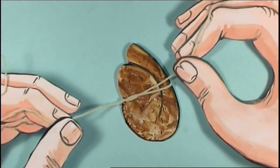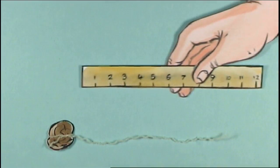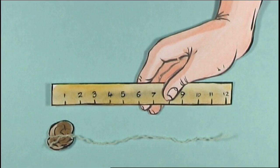Tie a piece of string around a hardened piece of dog poop, making sure the total length from turd to tip is exactly 12 inches.